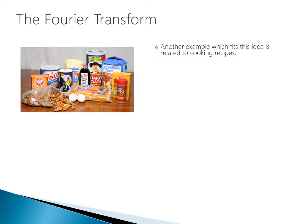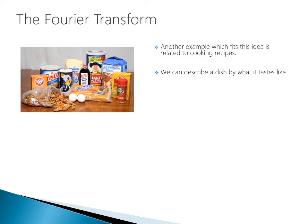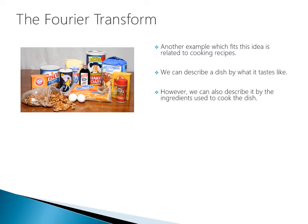Another analogy relates to cooking. We can describe a dish by what it tastes like — sugar, salt, pecan, raisins, baking soda — but we can also describe it by the ingredients used to cook it. If we add the right ingredients in the right amounts, we can recreate the taste. We can taste a food item, deconstruct it into its fundamental components, and if we understand exactly the right quantities, it is theoretically possible to rebuild back to the original dish. That's the essence of the Fourier Transform.